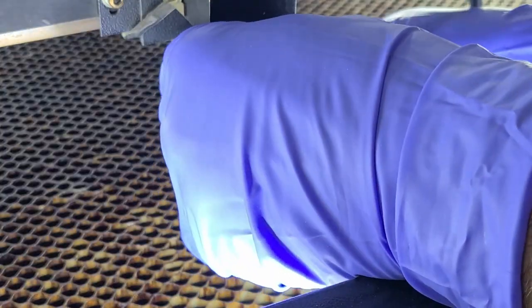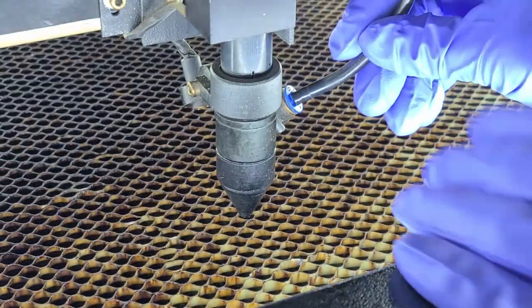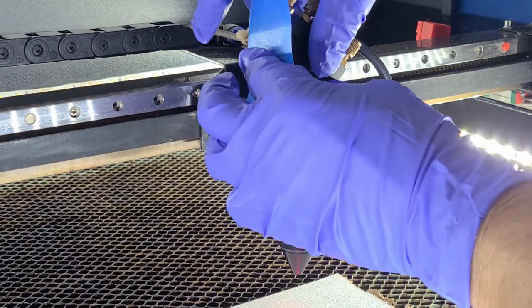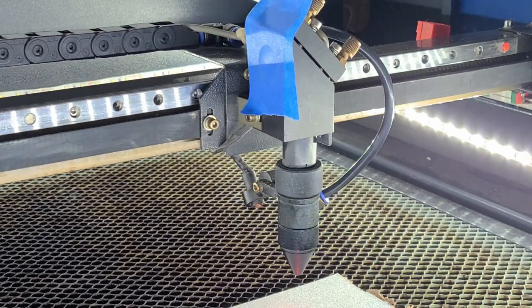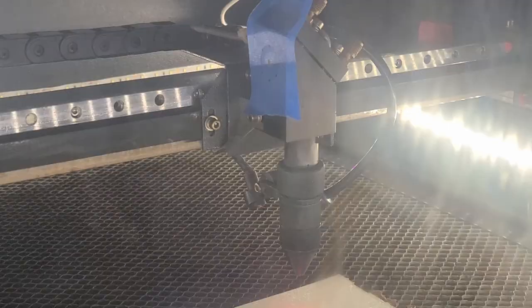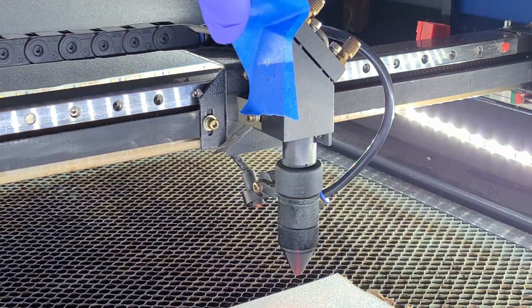Now that everything is back together, it's time to check for mirror alignment. Place a piece of tape over the third mirror and pulse it to make sure that you are still centered. If it is not centered, then you will need to go back through the mirrors and realign them until it is centered.